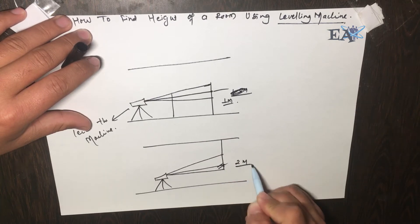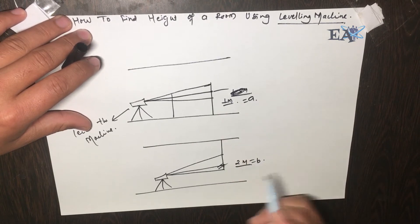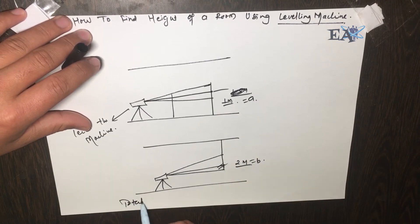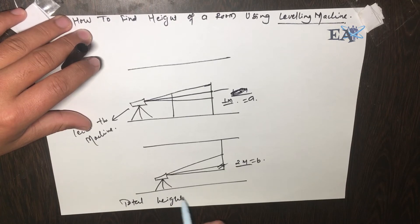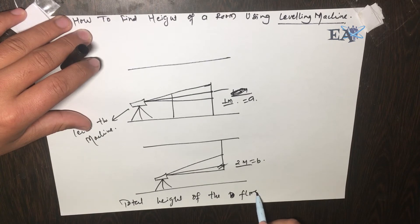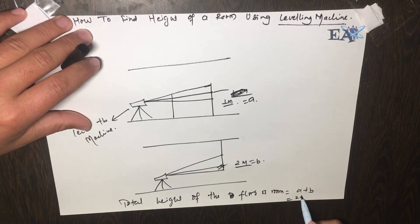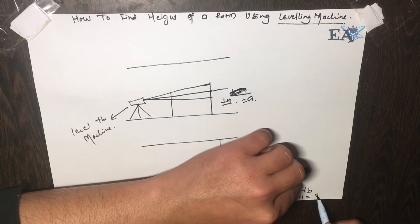This reading is A and the inverted reading is B. So total height of the floor or room is equal to A plus B, that is 2 plus 1 equals 3 meters.